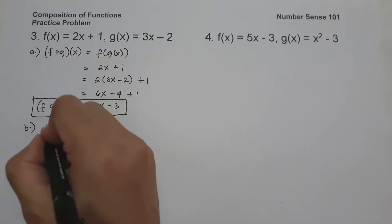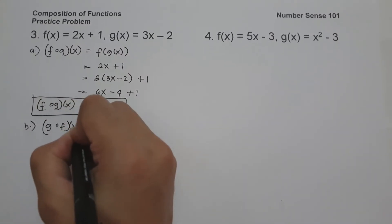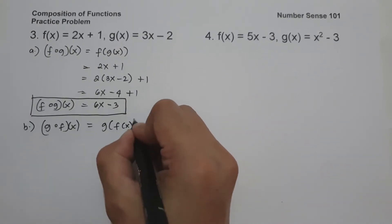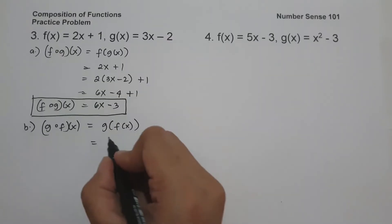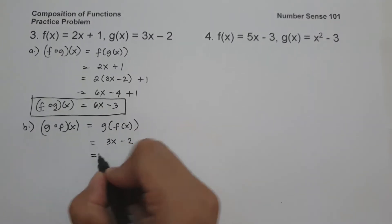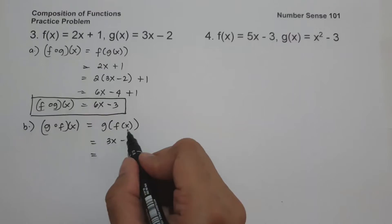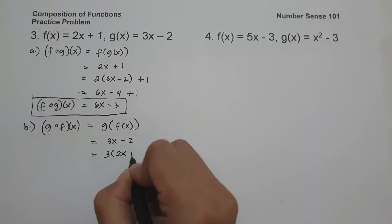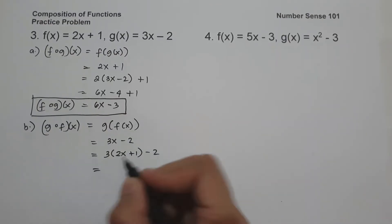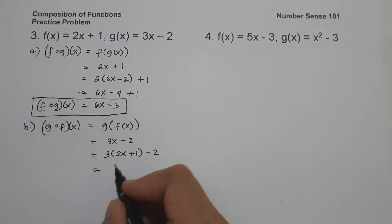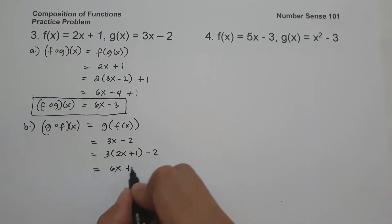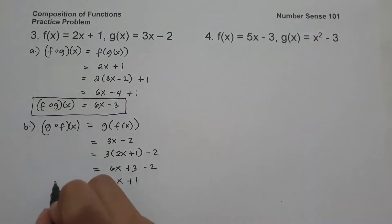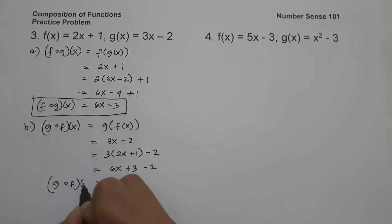On letter b, let us have g circle of f of x, and that is g of f of x. The value of g is 3x minus 2, and this time x is f of x, which is 2x plus 1. So this will be 3 times 2x plus 1 minus 2. That gives us 6x plus 3 minus 2, and that is 6x plus 1. And this is g circle of f of x.